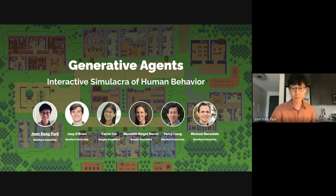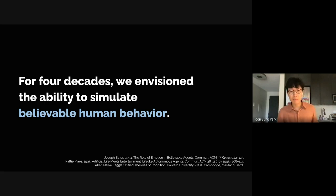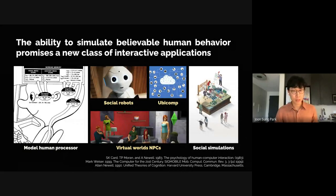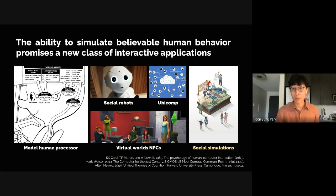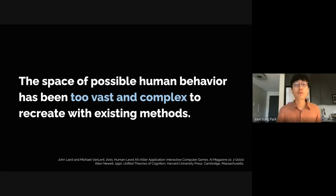For over four decades now, from the time of cognitive architectures and symbolic systems to statistical machine learning, we — the researchers and practitioners at the intersection of HCI and AI — have envisioned the ability to simulate believable human behavior, behavior that is so compelling and so human-like that it provides an illusion of life. This ability, if achieved, promised a new class of interactive applications ranging from modern human processors for usability testing to social robots, NPCs, and ubiquitous computing applications, and even to the foundation of small and large-scale social simulations that would test social science and economics theories difficult to implement in real life. But despite these wide application spaces, we faced fundamental challenges — the space of possibility in the way we behave and communicate was much too vast and complex to navigate with existing methods.